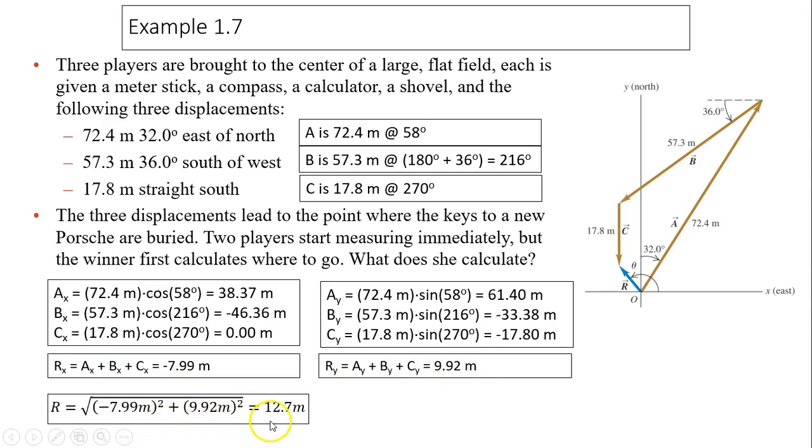What's the next step? Pythagorean theorem. This gives you the magnitude, how long it is. Next step, you find the direction. Use inverse tan. Remember, we only use the magnitude, not direction. So it's 9.92 divided by 7.99, giving 51.2 degrees.